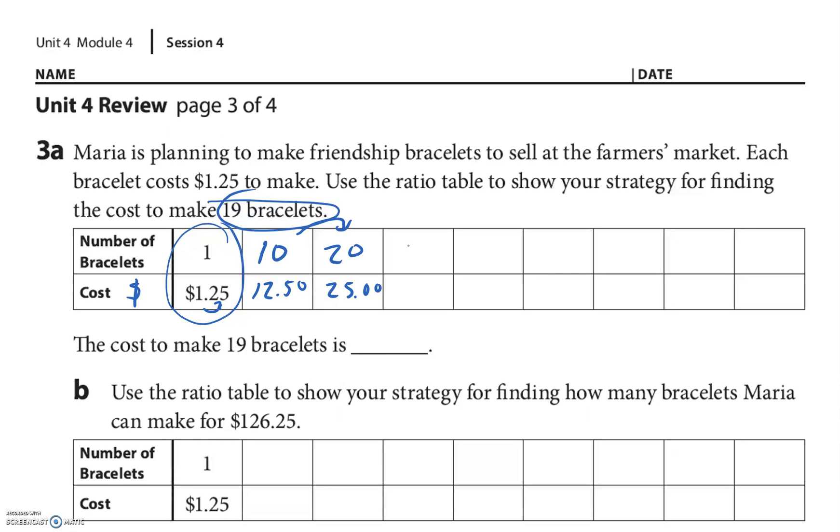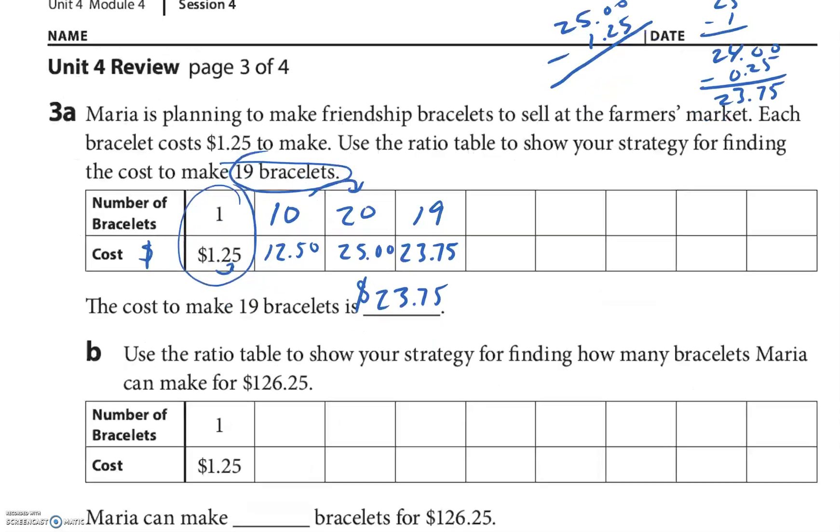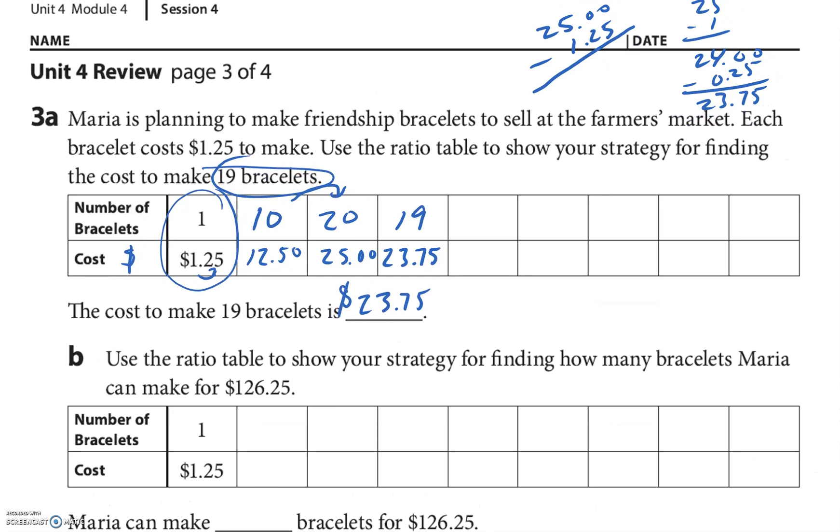To get to 19 we just subtract one of the bracelets, right? So it's $25 minus $1.25. I might subtract $25 minus a dollar, that's $24, and then I might subtract 25 cents. That's gonna be a quarter less, $23.75. Try the next one, or if you're still a little confused, go with me for a little bit and then you can pause it and try it on your own.